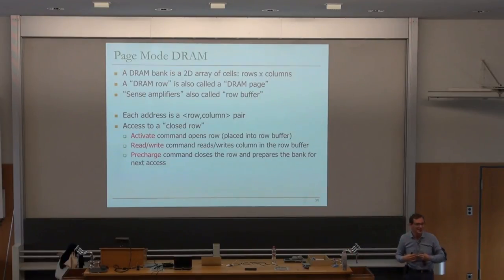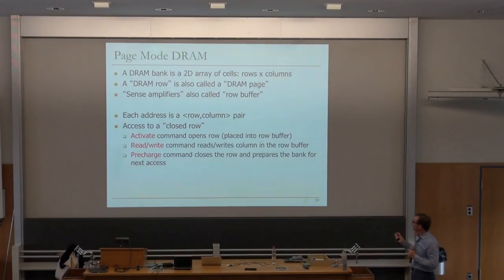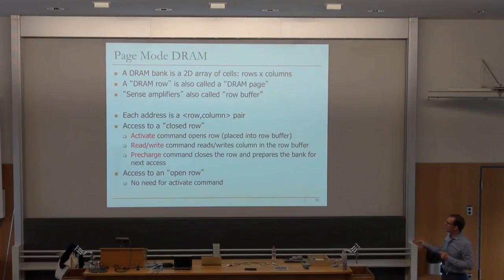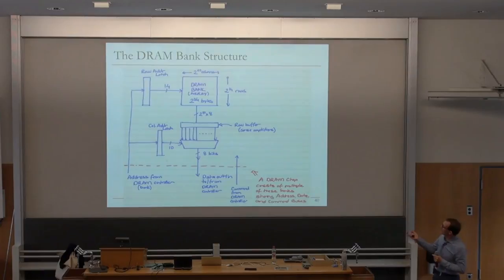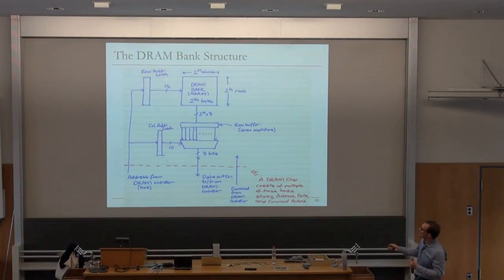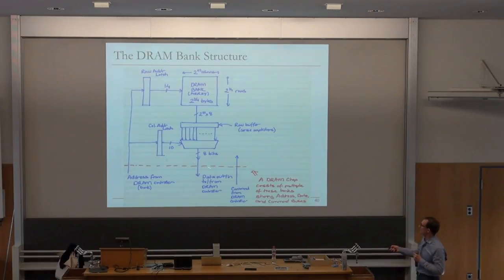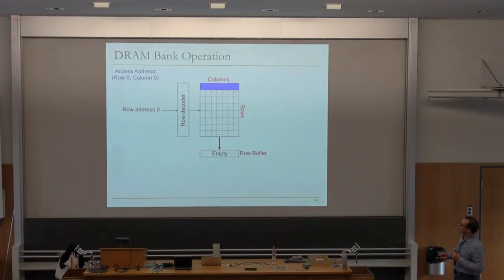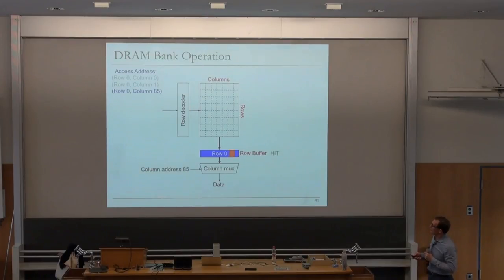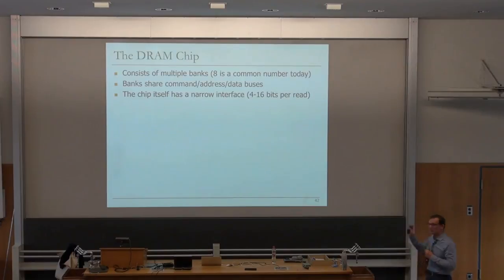Once you read or write, you need to wait for a while such that the data comes back, and then at some point the array becomes ready to pre-charge — which means once you're done with the read and write reliably, you pre-charge the array such that it's prepared for the next access. Pre-charge basically closes the row buffer and ensures the bit lines have the right level so the next row that you open can be sensed reliably. Access to an open row — no need for the activate command. DRAM chip consists of multiple banks; 8 is a common number, but increasing that number is also hard because banks share the command, address, and data buses, and a very long interconnect across large structures is fundamentally limited by load.